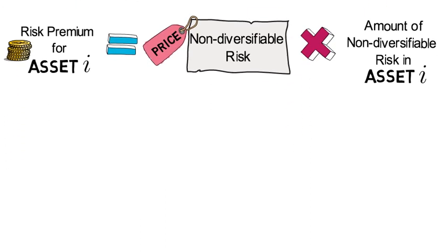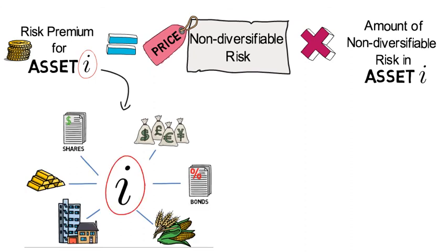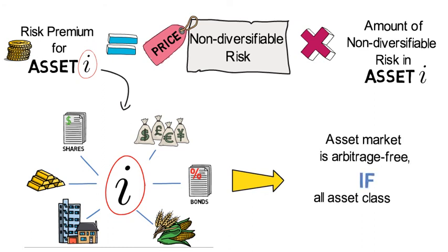So notice here also that you can easily imagine that each i stands for another asset class. Hence that restriction also tells us that an asset market is arbitrage free if all asset classes are priced with the same SDF m. The result is then that each ex ante expected asset risk premium coincides with the product of market price of risk times the amount of systematic risk.